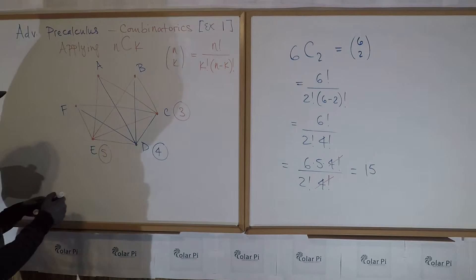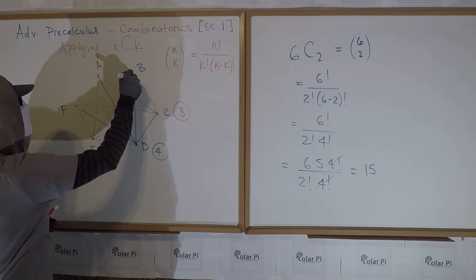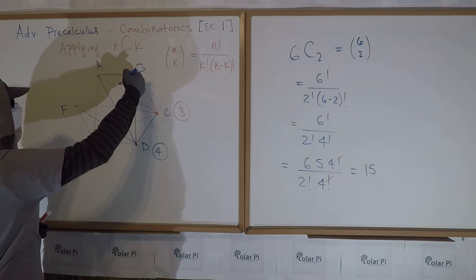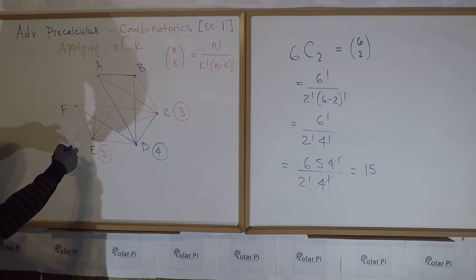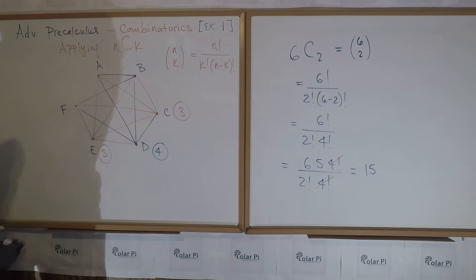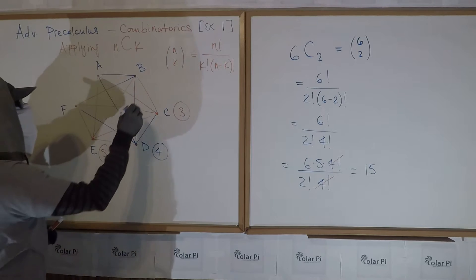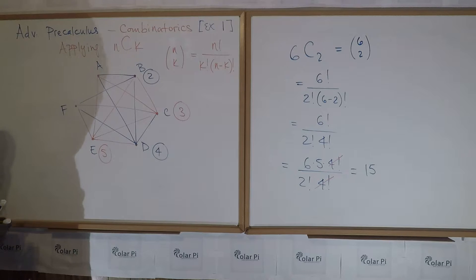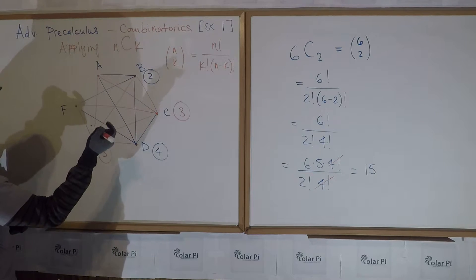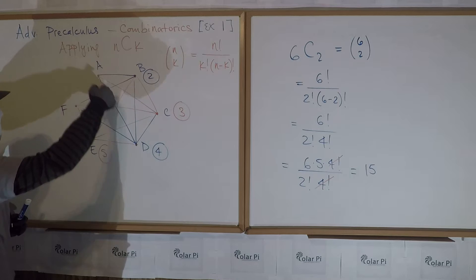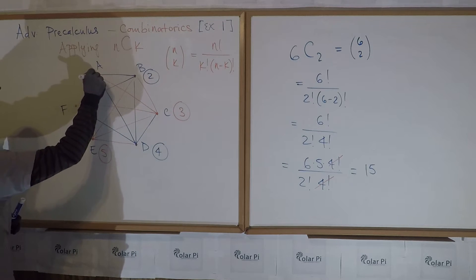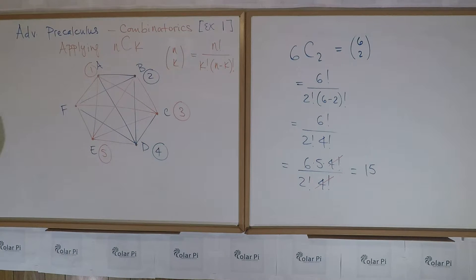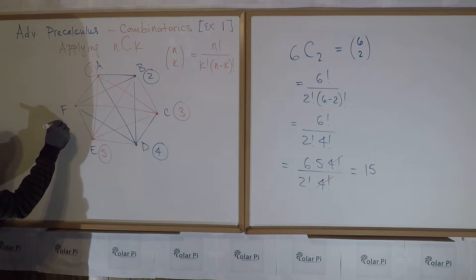And then from B, I could do this. I have gone here, I have gone here. I could do this — so from B there are two. And then from A, where haven't I gone? I've gone there, there, there, there. Here's the only place I haven't gone — there is one. And of course from F we've gone everywhere, so from F there are zero.